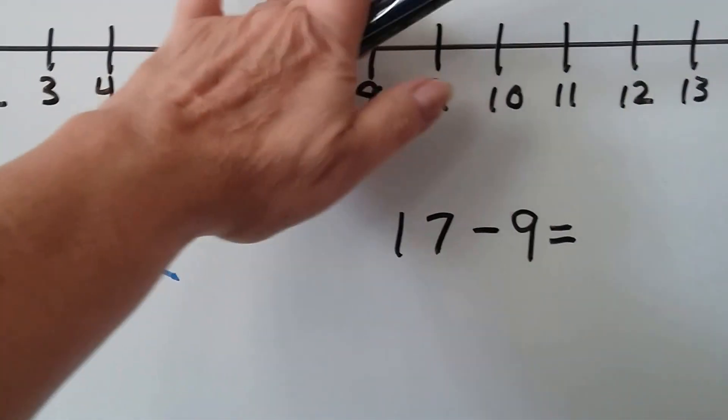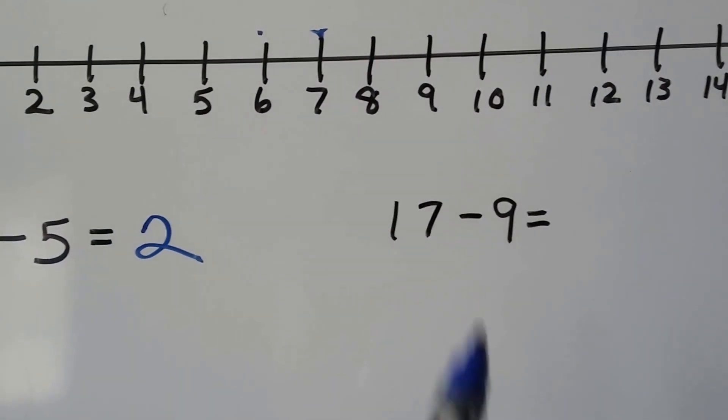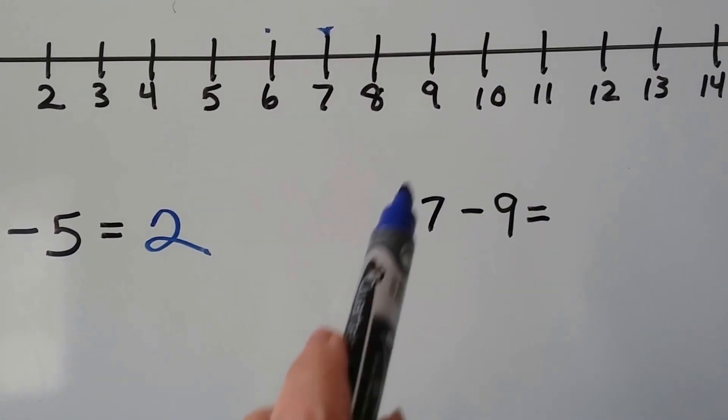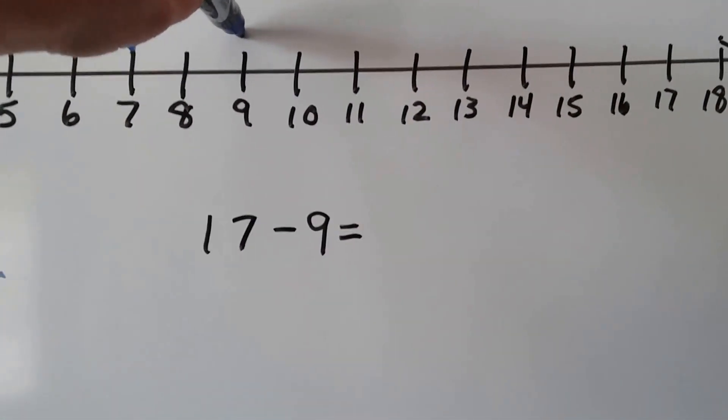Let's try 17 minus 9. We'll start at 9 and count up to 17. Here's the 9. I'm going to count up to 17.